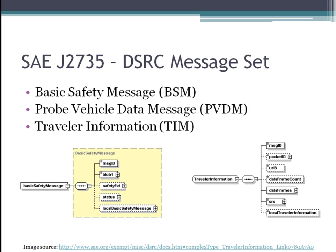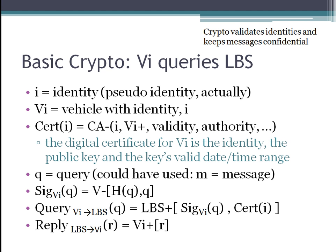DSRC is the range of communications specially designated for vehicular communications. The three main things it's supposed to help us with are safety, traffic congestion, and other services. The basic safety message is probably the most studied and most important message in this set. The probe vehicle message is also very important, and the traveler information message might fall into location-based services.